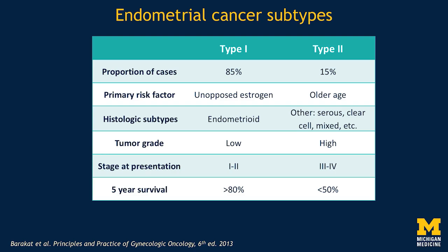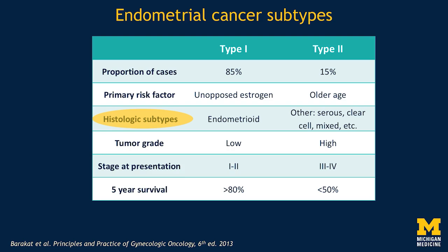Let's talk about endometrial cancer subtypes. Generally speaking, we talk about type 1 and type 2 cancers. Type 1 cancers are by far the more common type — 85% of endometrial cancer is this so-called type 1 subset. The primary risk factor is unopposed estrogen, usually related to obesity, sometimes related to hormone replacement therapy. The histologic subtype in type 1 cancer is endometrioid. Type 2 cancers may have other histologies, and particularly I want to draw your attention to serous carcinoma and clear cell carcinoma, which are bad actors among the type 2 cancers.